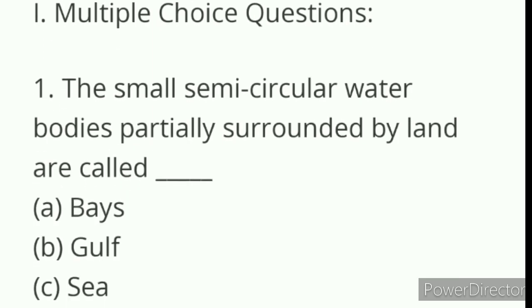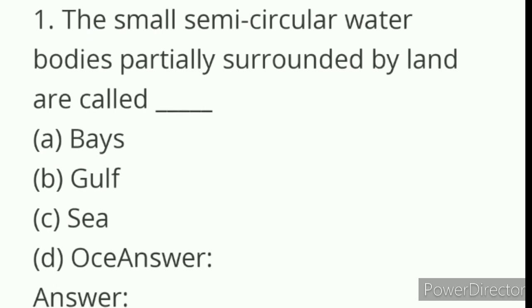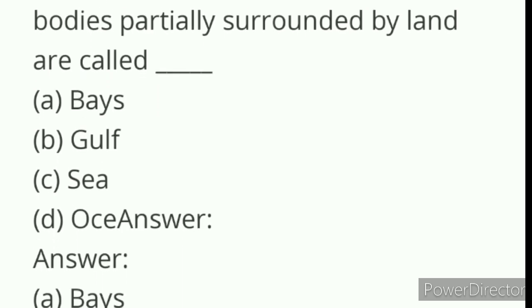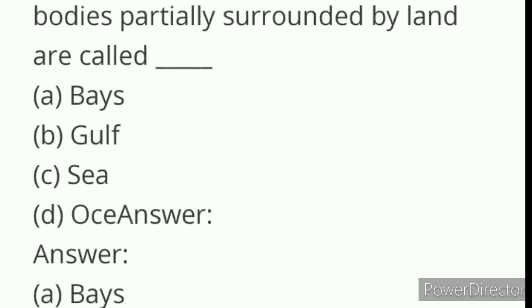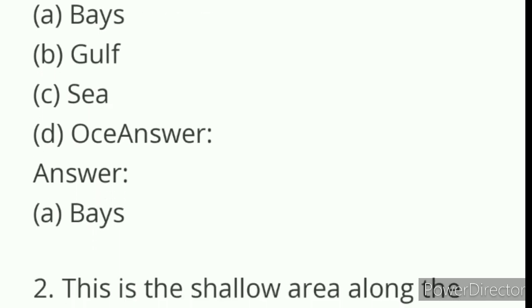First question: the small semi-circular water bodies particularly surrounded by land are called dash. Options are A. Bay, B. Gulf, C. Seas, D. Ocean. Answer is Bay.